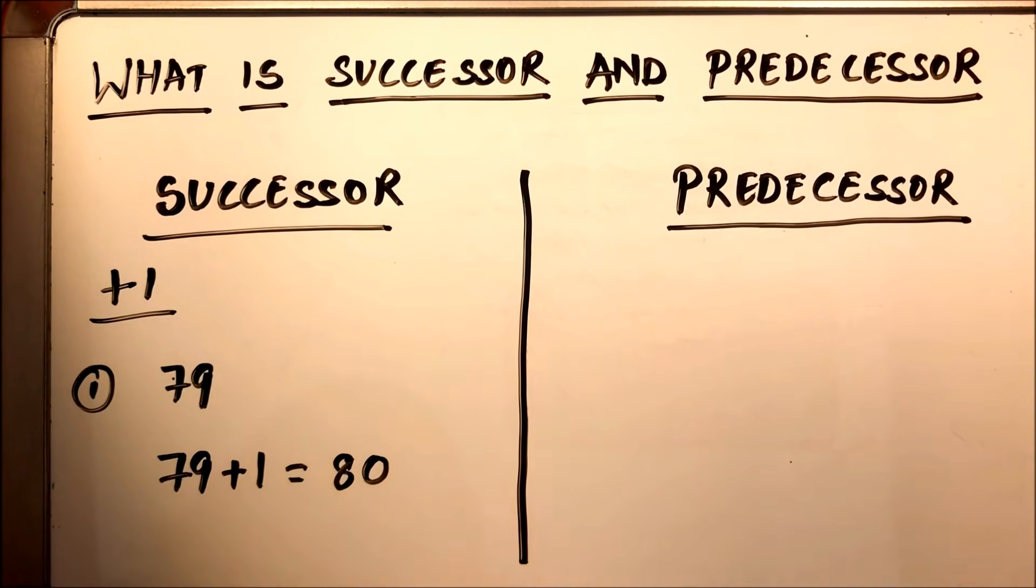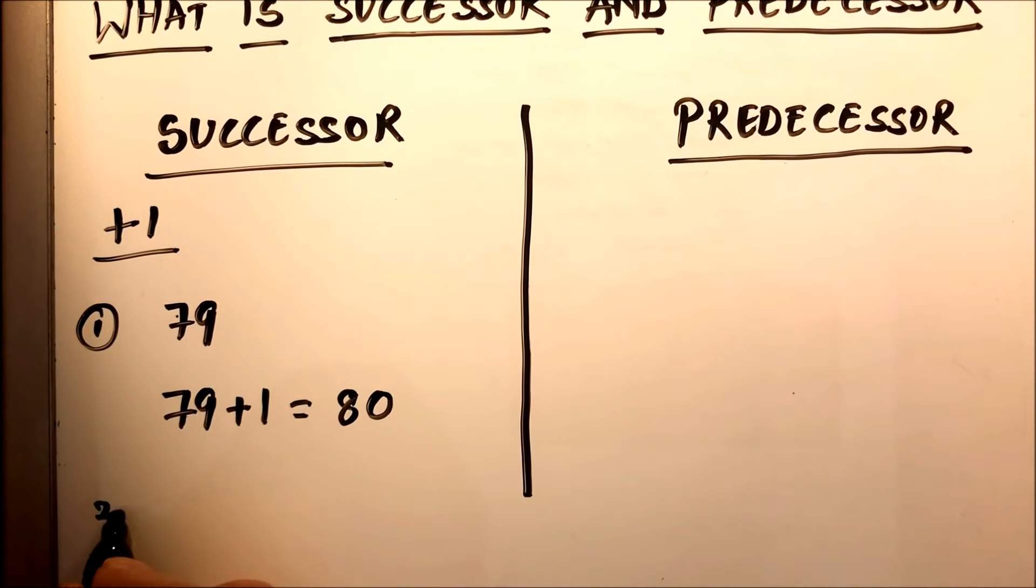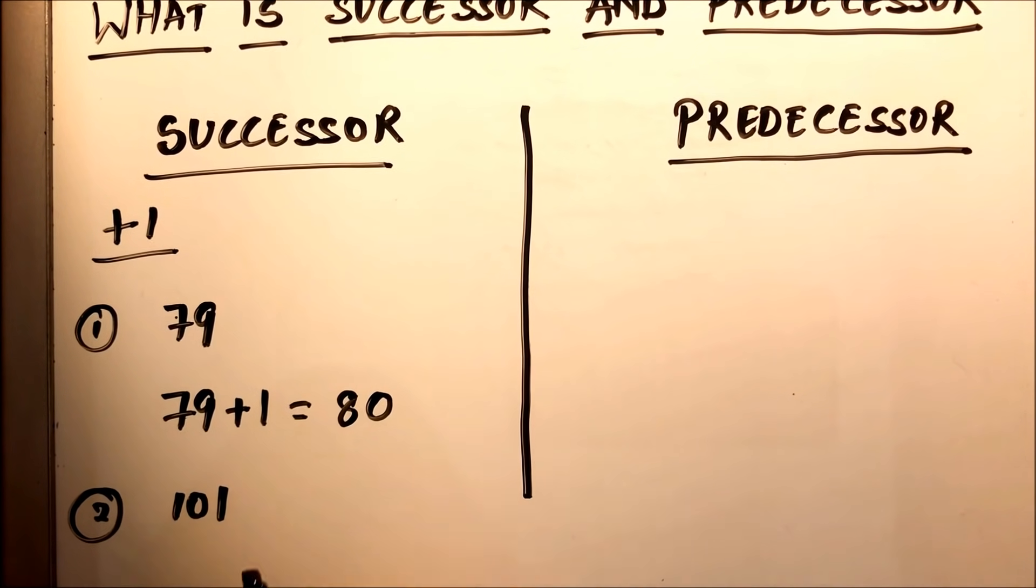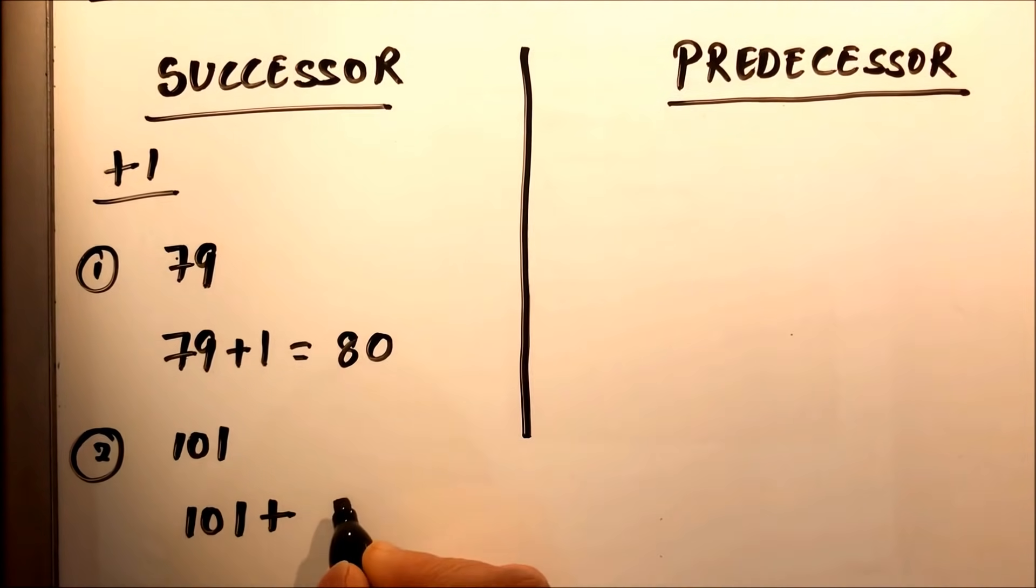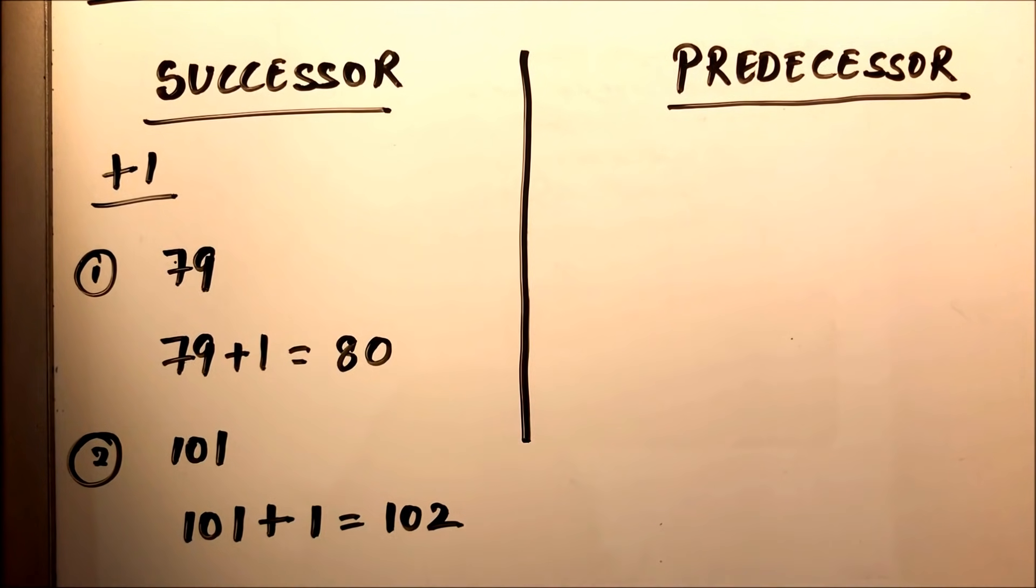One more example: to find the successor of 101, the successor of 101 will be 101 plus 1. At any time, if you need to find the successor of any number, just add 1.